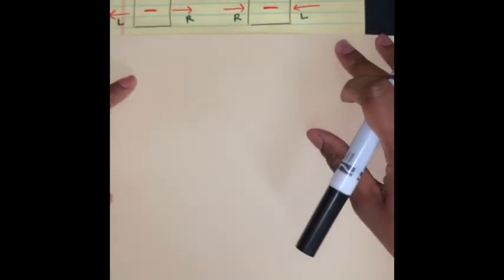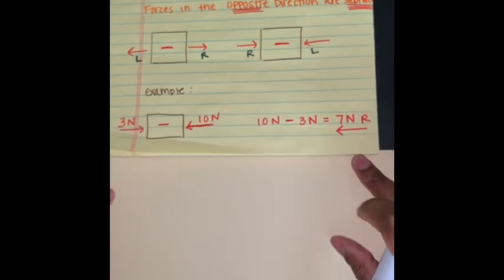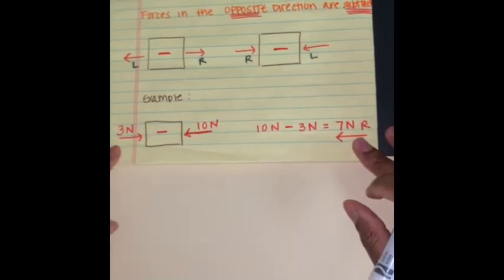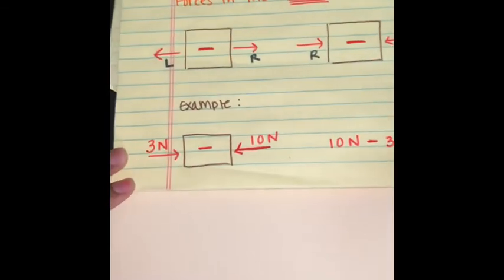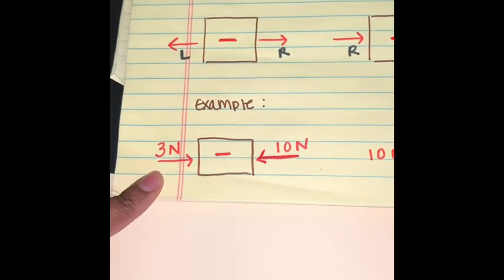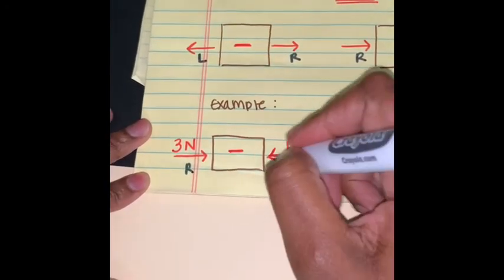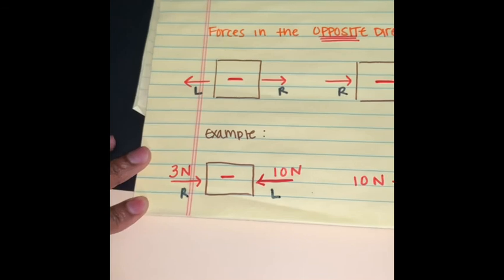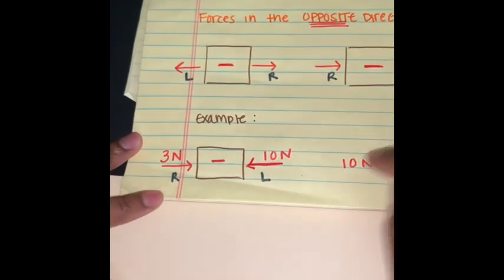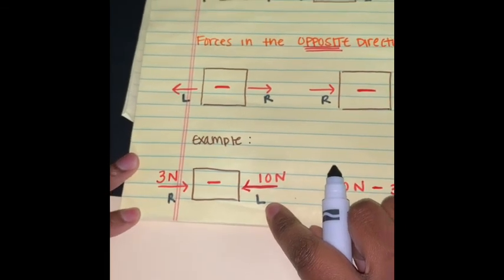I've provided an example that you could see in the future during this week on any of the problems that you have to solve for. I have an example here showing us that I have three newtons going to the right and I have ten newtons going to the left.